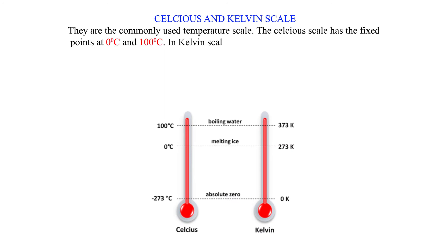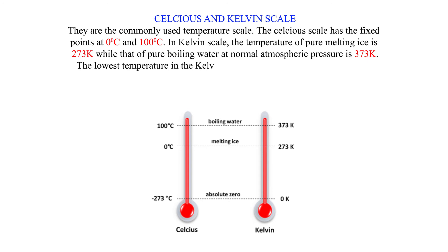In Kelvin scale, the temperature of pure melting ice is 273K while that of pure boiling water at normal atmospheric pressure is 373K. The lowest temperature in the Kelvin scale, 0K,